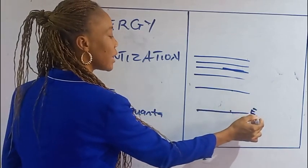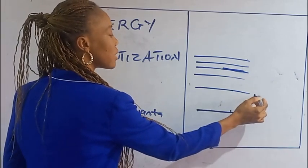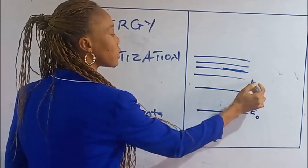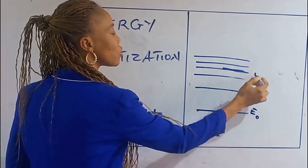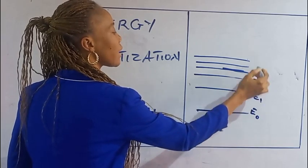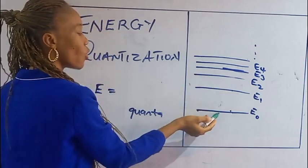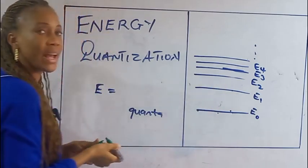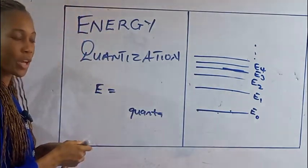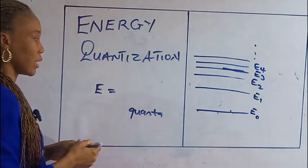It is that we have E0, E1, E2, E3, E4, and so on. We cannot have any energy level in between.